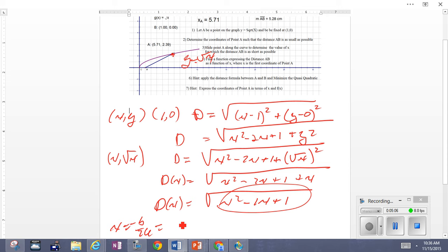That being -b/(2a) would make that 1/2 the value of x. If 1/2 is the value of x, then the value of y is √(1/2). So the coordinates of the point are (1/2, √(1/2)).